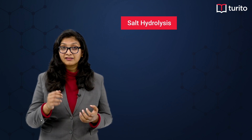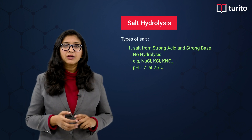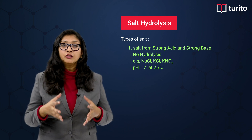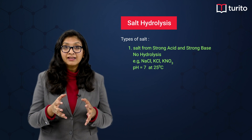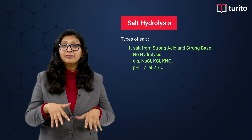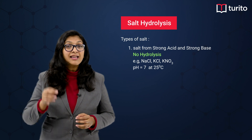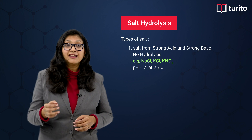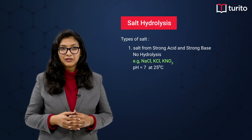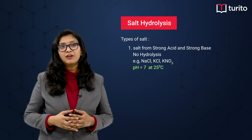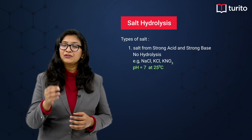Based on the type of acid and base it is formed from, salt is divided into four types. The first type is salt from a strong acid and strong base. Since both the cation and anion come from a strong acid and strong base, there is no hydrolysis. Examples are NaCl, KCl, KNO3. The pH at 25°C will be equal to 7 for these salts.